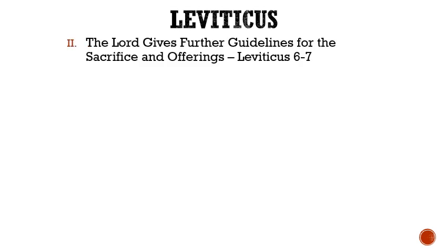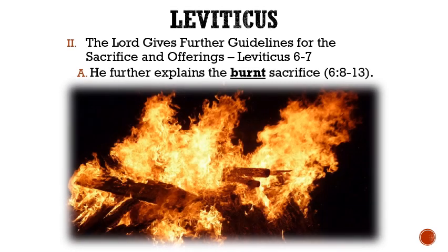Roman numeral 2: The Lord gives further guidelines for the sacrifice and offerings. Letter A: He further explains the burnt sacrifice. For this sacrifice, the priest would wear linen to start burning the sacrifice, and then change into other garments when taking the ashes outside of the camp. This sacrifice was to burn all night, and the fire was to be continual and never go out.